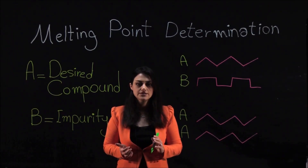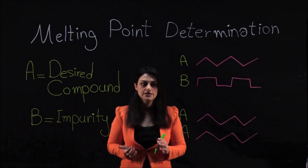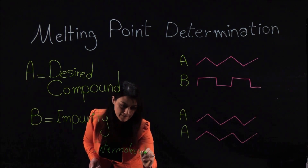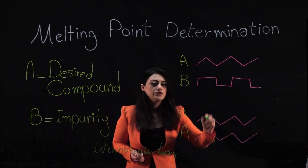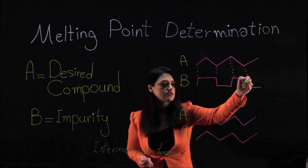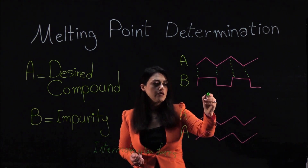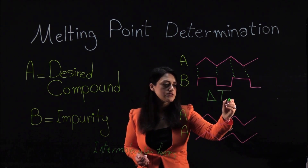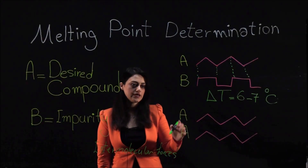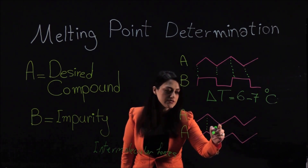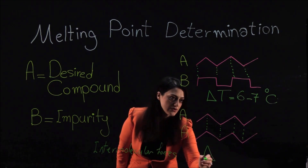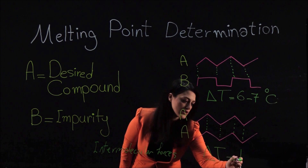A compound's melting point is drastically affected by impurities due to variances in the intermolecular forces between different compounds. You can see here the difference between the lengths of the lines, which represents the range of intermolecular forces between the desired compound and impurities. Impure compounds show broad melting ranges of up to 6 to 7 degrees Celsius. Pure compounds have very similar intermolecular forces, so the energy required to break them is more specific, showing narrow melting ranges of 1 to 3 degrees Celsius.